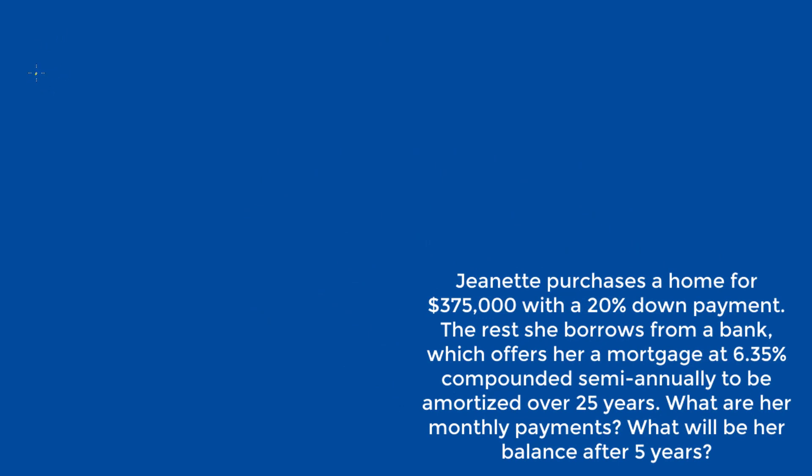Out of the $375,000 of the mortgage, 20% is paid off by Jeanette, or in other words, $75,000 is paid off by Jeanette. The remaining 80% is what she takes on as a loan. So $300,000 is the value of the mortgage. And before we can calculate the value of the monthly payments, we need to resolve one more issue.